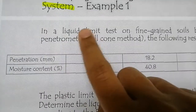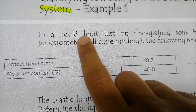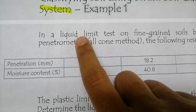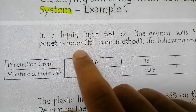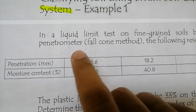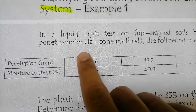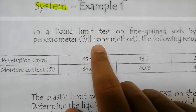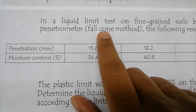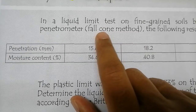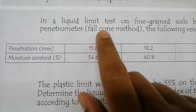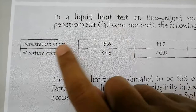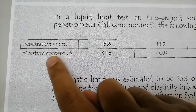Remember from the previous slide, in order to get the liquid limit value we have two ways — two tests in the lab to determine the liquid limit. The first one is the percussion cup method, which you will do in the lab hopefully when COVID-19 is over. The second one is the fall cone method.